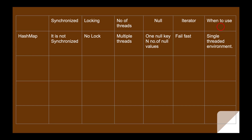Coming to HashMap: HashMap is not thread-safe, meaning it is not synchronized. If multiple threads are accessing the same HashMap and trying to modify its structure, it may cause inconsistency in the state of the HashMap. Since it is not synchronized, there is no lock, so any number of threads will be allowed to operate on the object. It allows one null key and any number of null values. HashMap returns a fail-fast iterator, which throws ConcurrentModificationException. It should be used in a single-threaded environment.